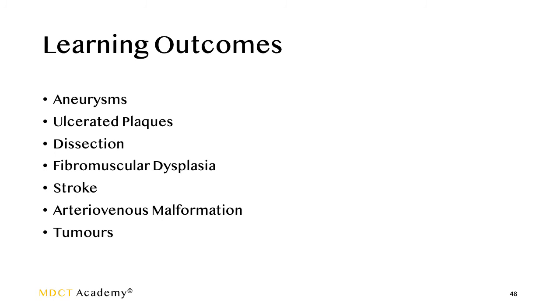Remember, carotid CTA is not just about the vasculature — it encompasses infections, dissections, ulcerated plaques, carotid webs causing thrombosis or TIAs, and tumors including paragangliomas and nerve-based tumors such as schwannomas and neurofibromas. In this lecture we have looked at aneurysms, ulcerated plaques, dissection, fibromuscular dysplasia, stroke, arteriovenous malformations, and tumors.